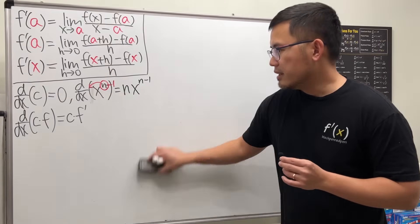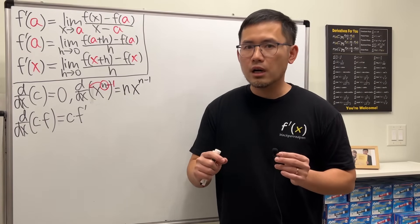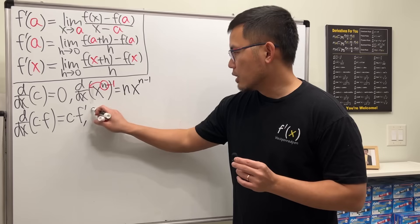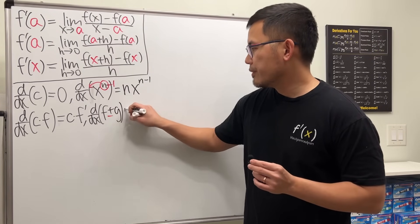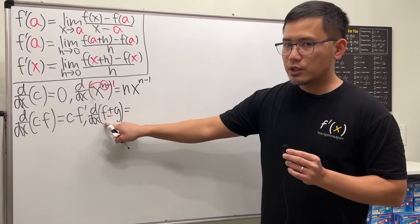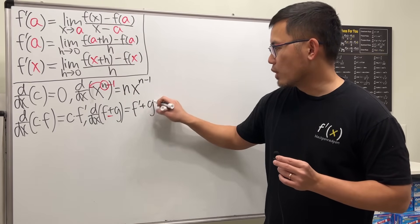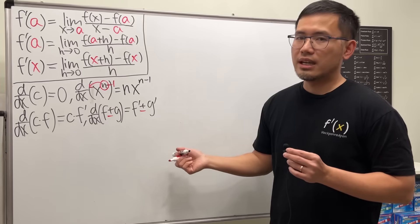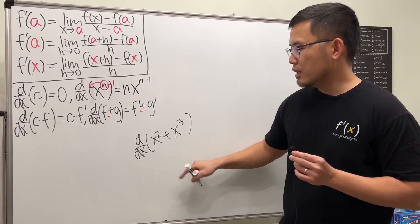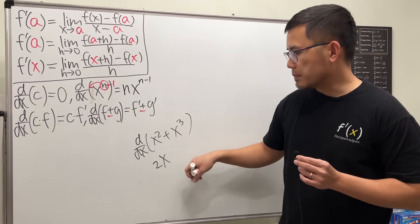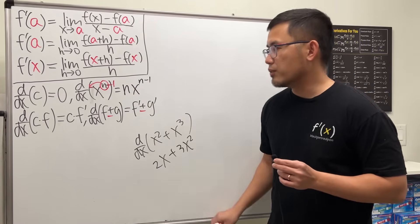Next, if we're taking the derivative of a sum or difference of two functions — d/dx of f plus or minus g — you just take the derivative of each one separately. For a sum you add them; for a difference you subtract. For example, the derivative of x squared plus x cubed: use the power rule on each to get 2x plus 3x squared.